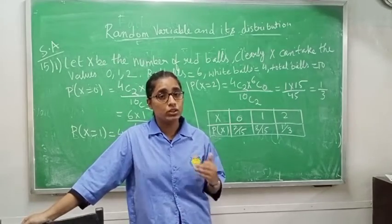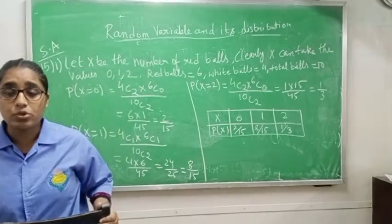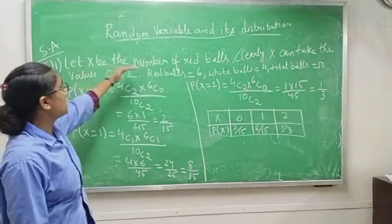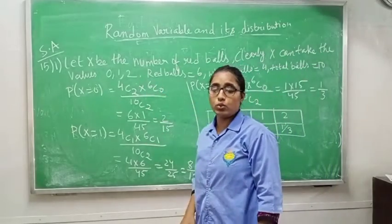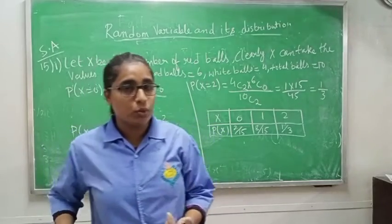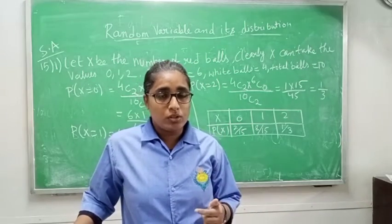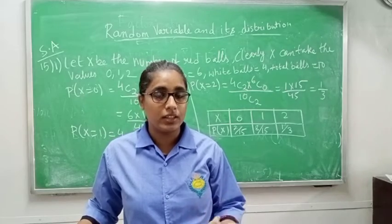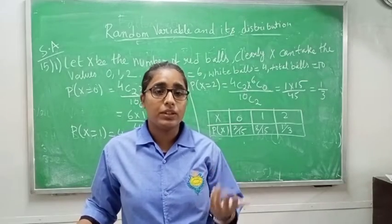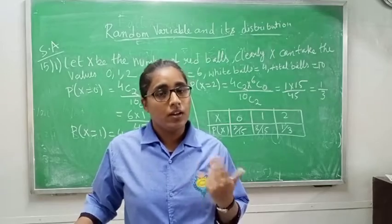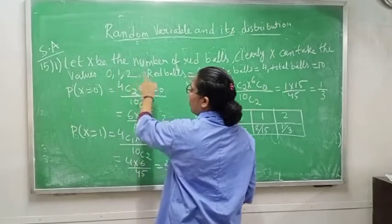Let X be the number of red balls. Clearly, X can take the values 0, 1, or 2. When drawing 2 balls, there may be 0 red balls, 1 red and 1 white, or both red. So X takes values 0, 1, or 2.